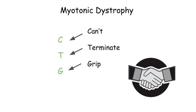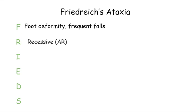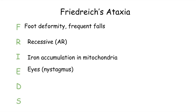Now let's move on to Friedrich's ataxia. We can remember the clinical features with FRIENDSS — no N. F stands for foot deformity or frequent falls, R stands for recessive (autosomal recessive inheritance), I for iron accumulation in the mitochondria, E for eyes as these patients can have nystagmus, D for diabetes mellitus, and S for scoliosis.